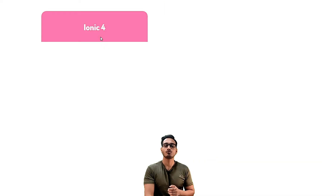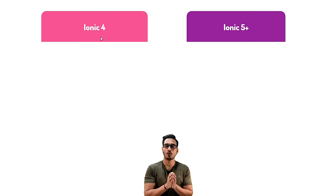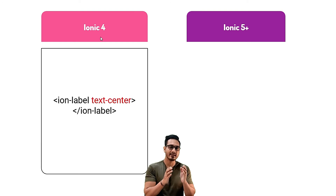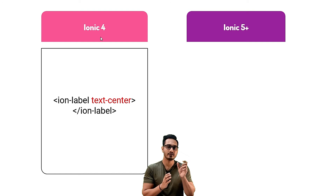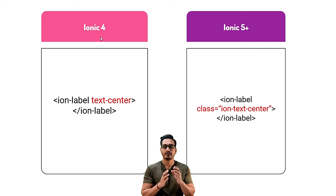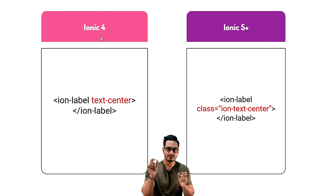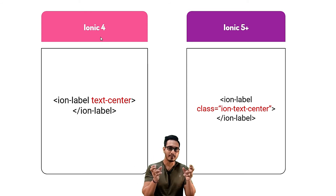If you want to know more about the difference between Ionic 4 and Ionic 5 plus, let's take an example using ion-label. In Ionic 4, if you want to center a label, you pass 'text-center' as an attribute directly. But in Ionic 5 and above, the syntax changed — you use a class instead, and inside the class you pass 'ion-text-center'. So where Ionic 4 used a plain attribute, Ionic 5 uses a class with the 'ion-' prefix.